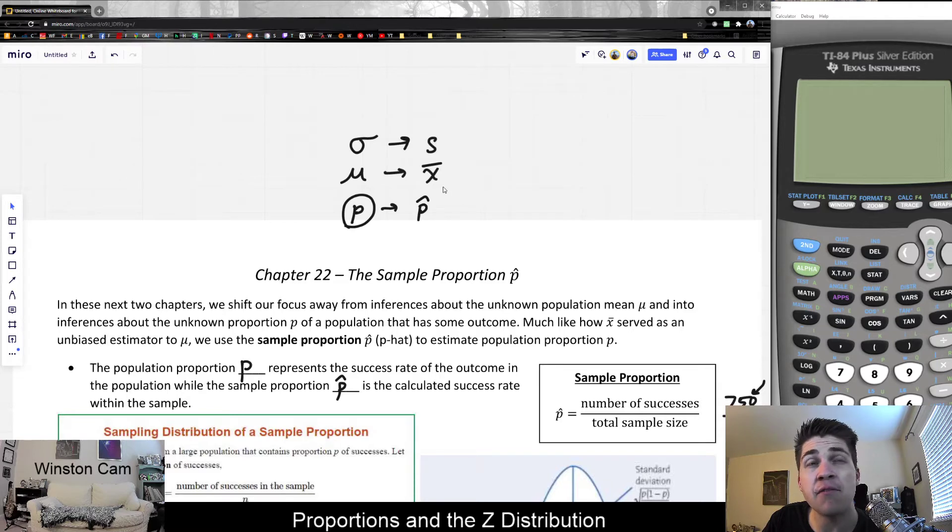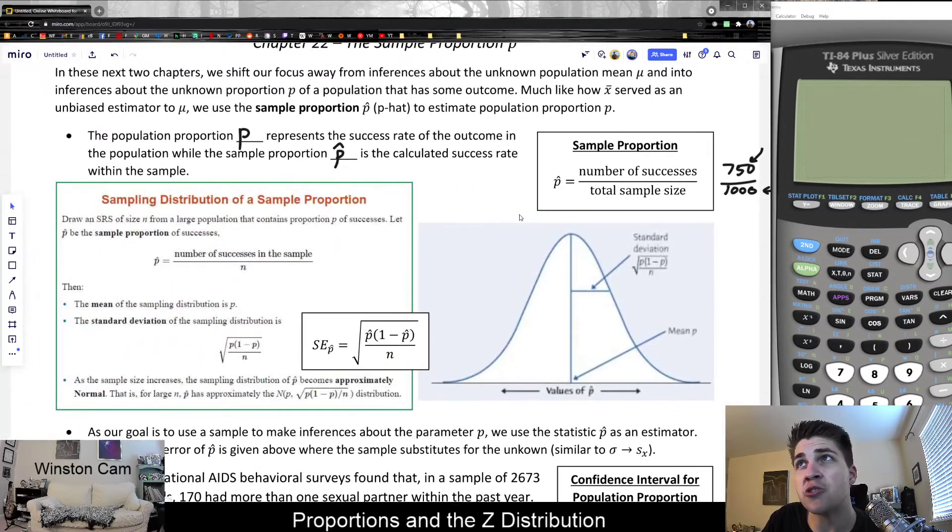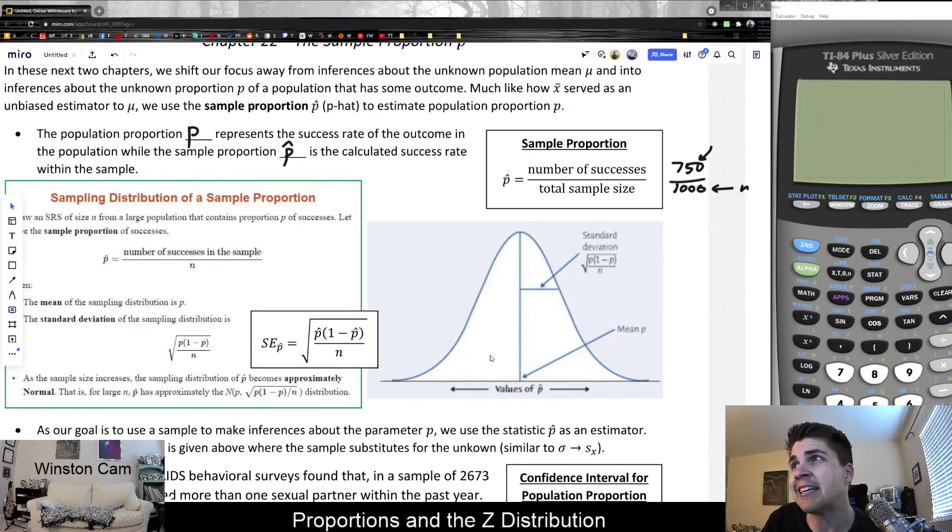When we take a simple random sample of people, the problem is it's not always going to be directly on. But what will happen is it will form a normal distribution. This is what we call the distribution based on a sample proportion.